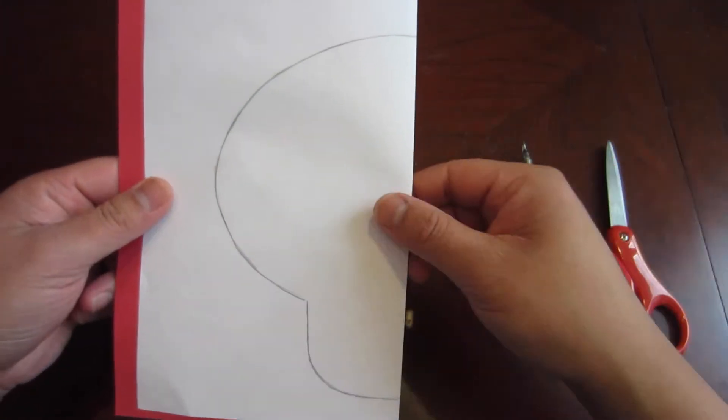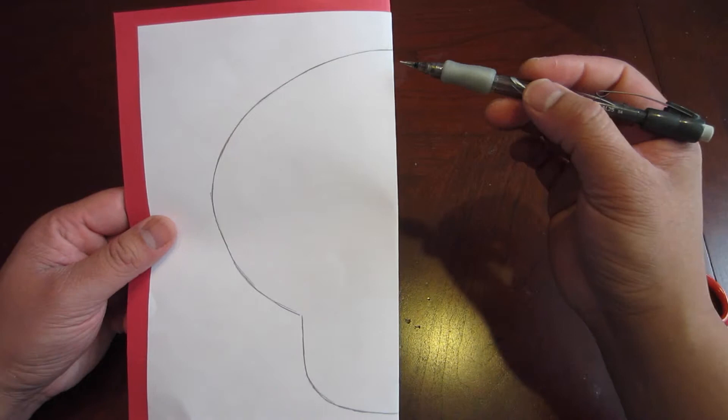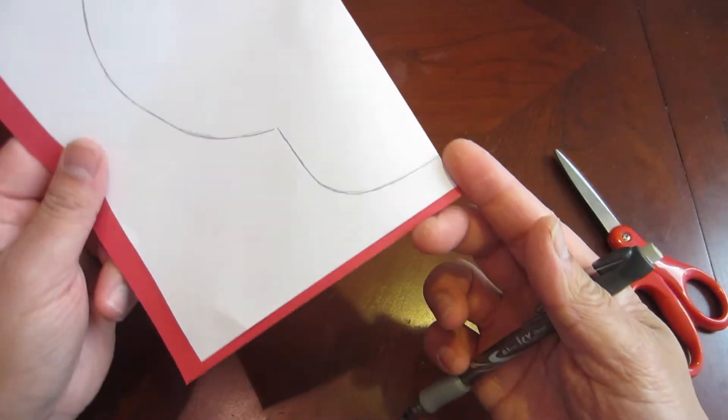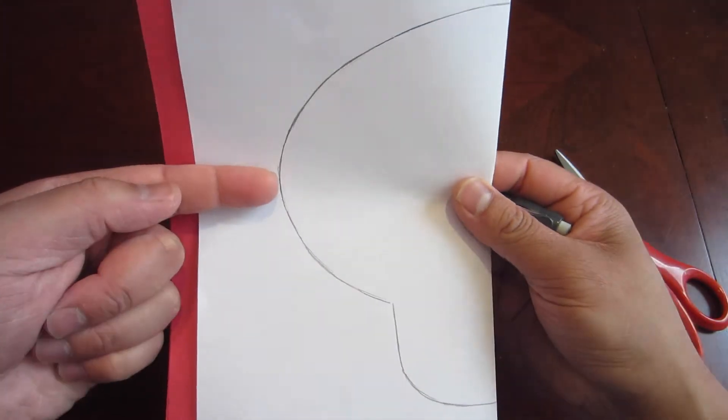Now draw half a mushroom shape on one side of the fold. The measurements for the mushroom are half an inch from the top of the edge of the white paper, half an inch from the bottom and on the side is one and a half inches from the edge.